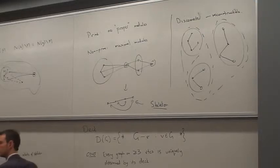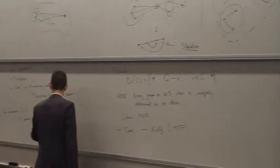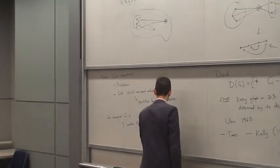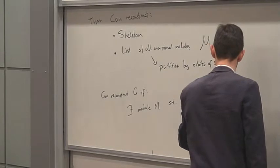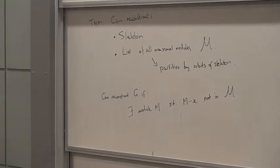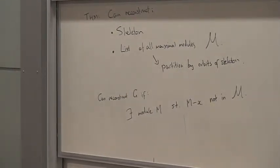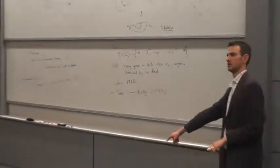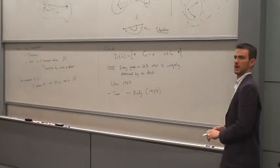So if there exists a module such that M minus X for some vertex X in the module is not in the list of maximal modules, then I can take it out and I know that's going to exist somewhere in my deck. And that is enough to let me reconstruct because I can go and I know exactly where that came from and everything else is correct, so you just put the module you wanted back in.